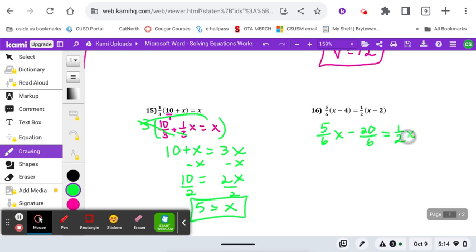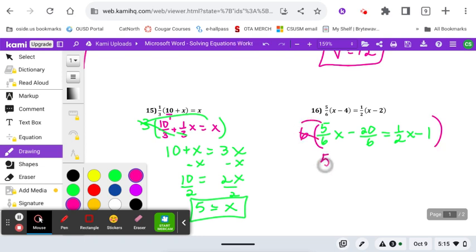So again, do we want to apply this before we distribute or after? It's literally up to you, but I would get 5, 6x minus 26. Now if I want to get rid of this denominator of 6 and 2, I'm going to multiply everything by 6. 6 times 5, 6 times negative 26, 2 goes into 6 three times, 3 times 1, and then 6 times negative 1.